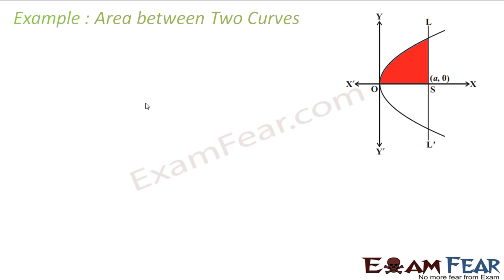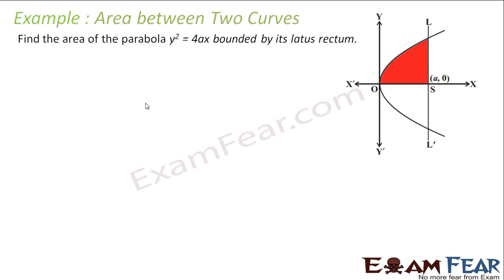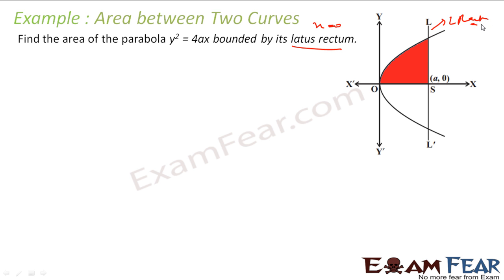Let us take one more example where we have to find the area of parabola y² equal to 4x, bounded by its latus rectum. This kind of question we have done before, but the key thing here is we should know what the latus rectum is and what its equation is. The latus rectum is the line x equal to a.